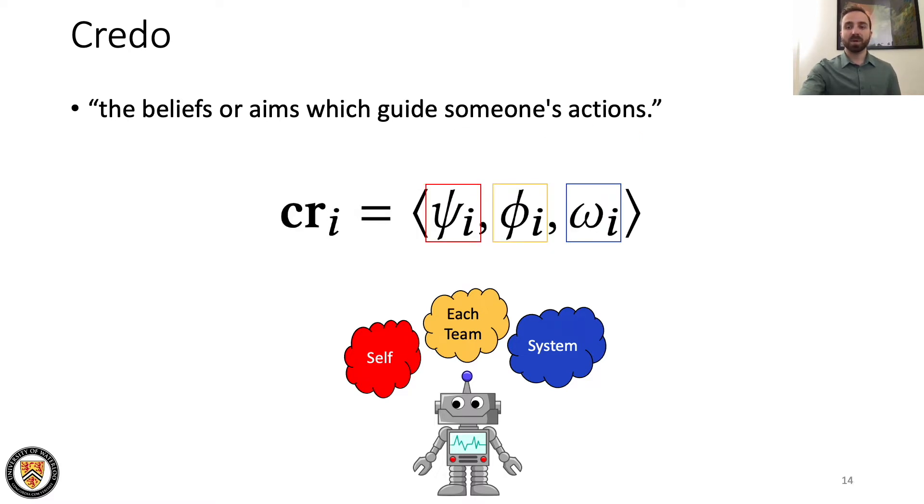In this paper, we explore the base case where agents belong to exactly one team. So agents' credo vectors have three parameters to regulate how much reward they receive from themselves, their team, and the entire system.